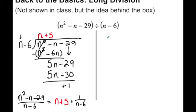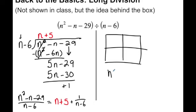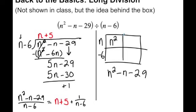Let's see how it would work with the box. With the box, the setup isn't always intuitive. I set my box up, and I know that I need to multiply to get n squared, and I know one of my sides is n minus 6. We start by putting our leading term in the upper left, and I ask what times n will give me n squared — the answer is n. Because this is n, the adjacent cell needs to be negative 6n.